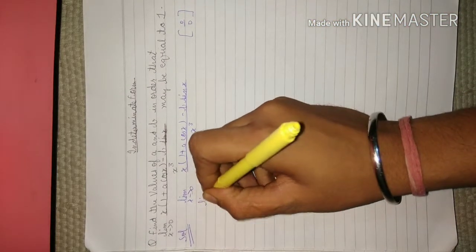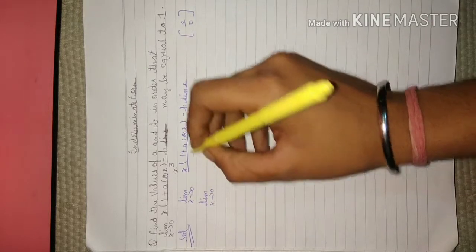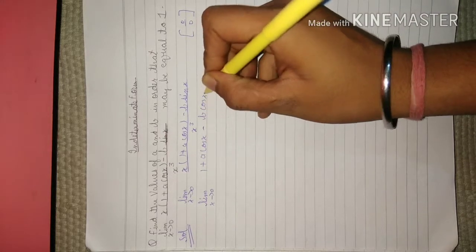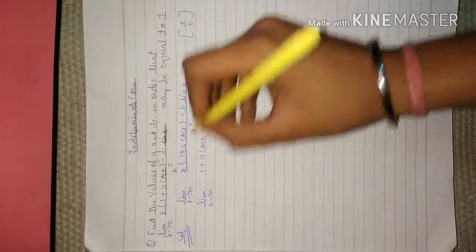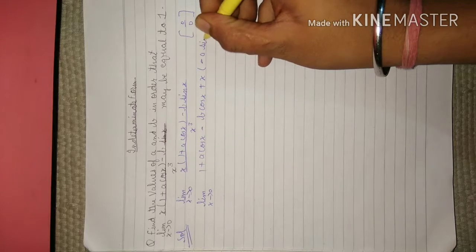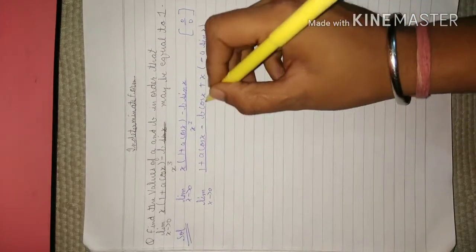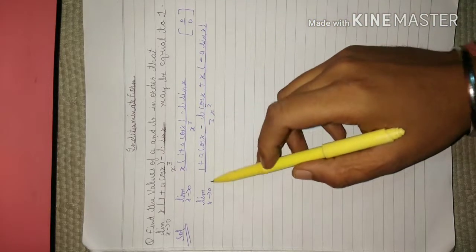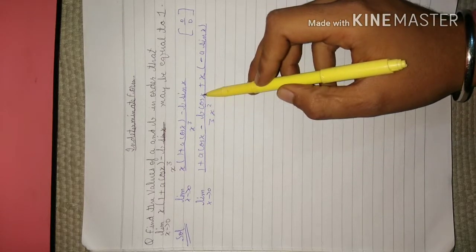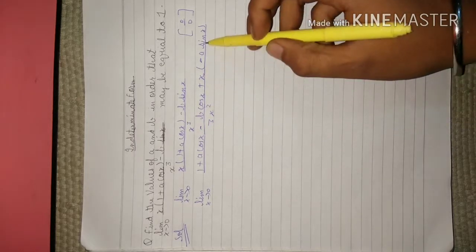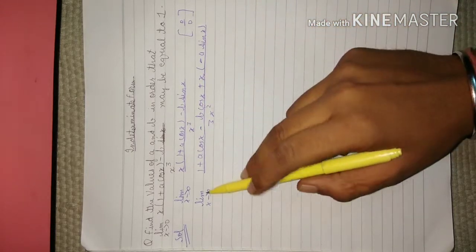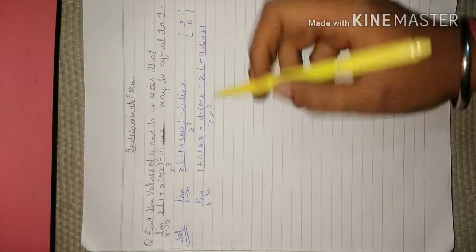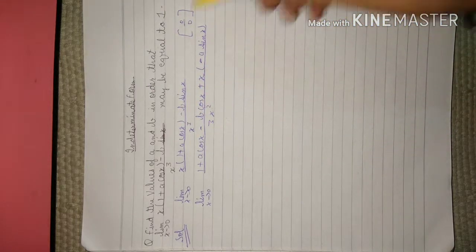Therefore applying L'Hôpital's rule, we get the limit x tends to 0 of (1 + a·cos x - b·cos x + x - a·sin x) upon 3x squared. If we put x equals to 0, we get 1 minus b plus a in the numerator and 0 in the denominator, which tends to infinity. But the limit is given as 1.